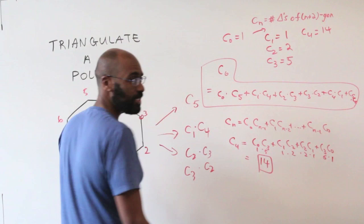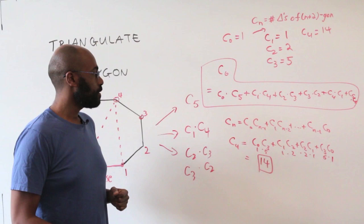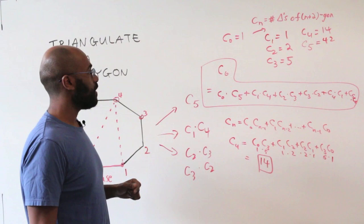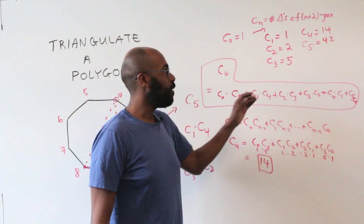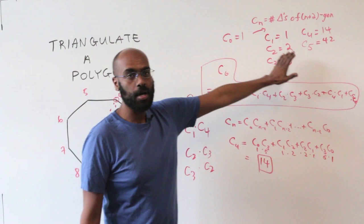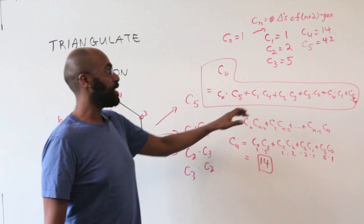If we do the same type of calculation, it turns out that C_5 is the magical number 42. You notice that if you want an explicit formula for C_n in terms of n, it's actually not clear whatsoever what the pattern is. We'll come back to that, and instead I want to think about what other counting problems are counted by these same numbers.